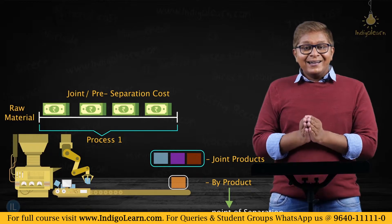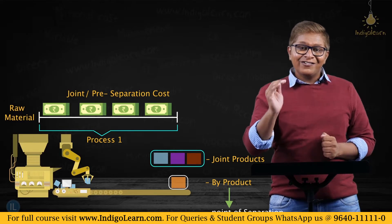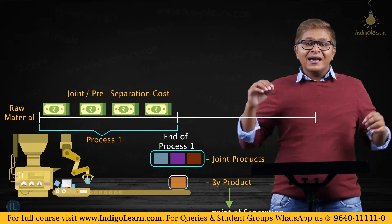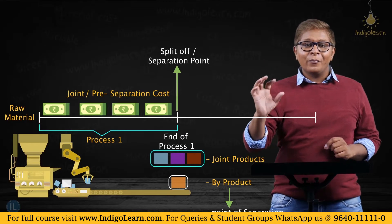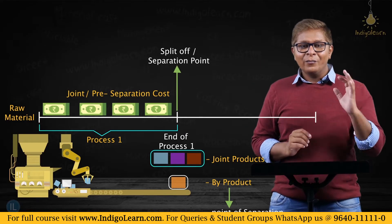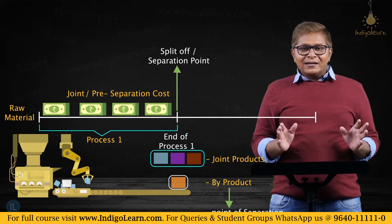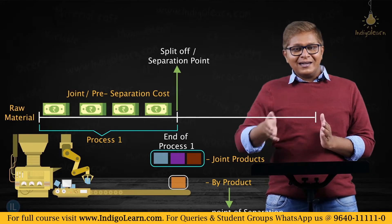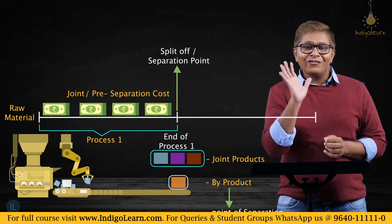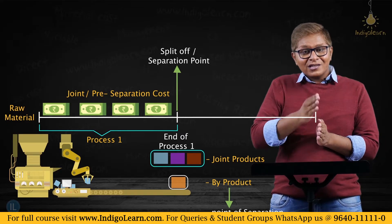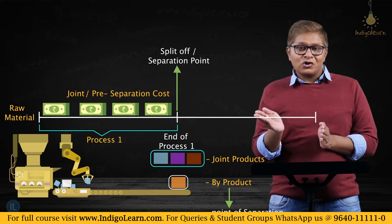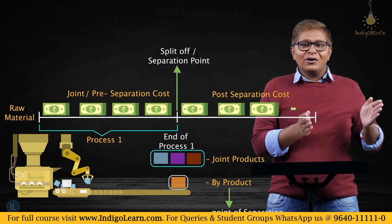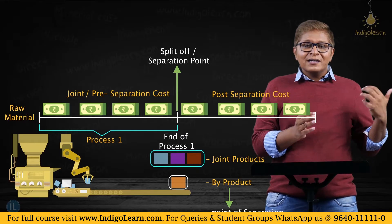The end of process 1, at which the four products emerge or come into existence, is called the split-off point or the separation point. At a broad level, there is a thin line of division which divides all costs between pre-separation and post-separation — that line is called the split-off point. All costs incurred before the split-off point are joint cost, common cost, or pre-separation cost; all costs incurred after the split-off point are called post-separation cost or post-split-off cost.